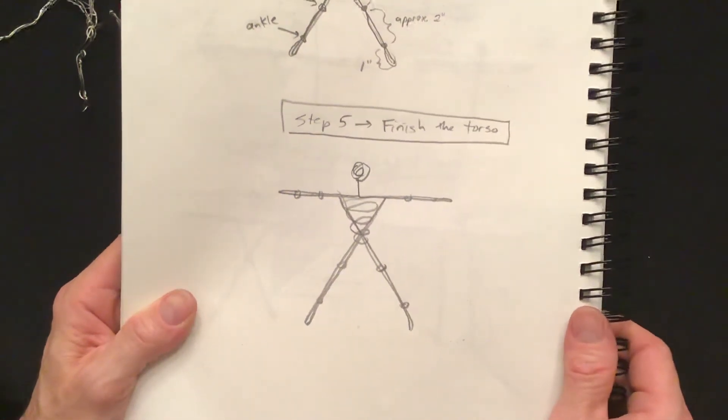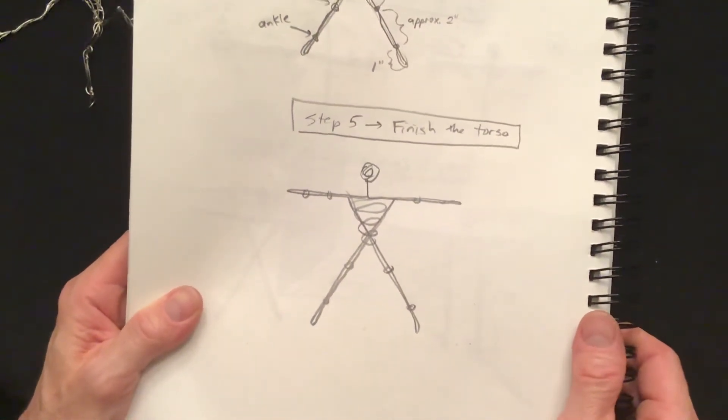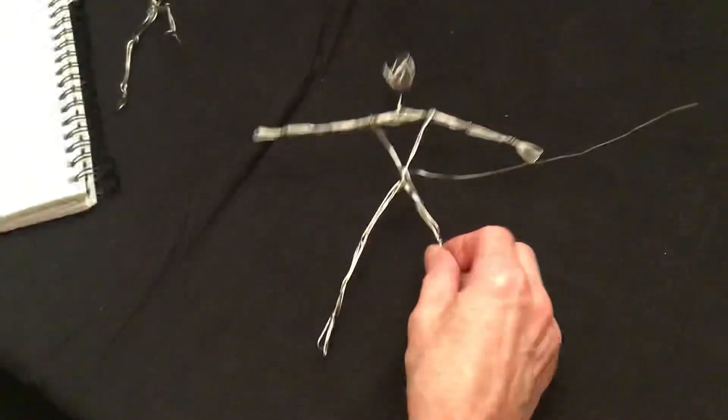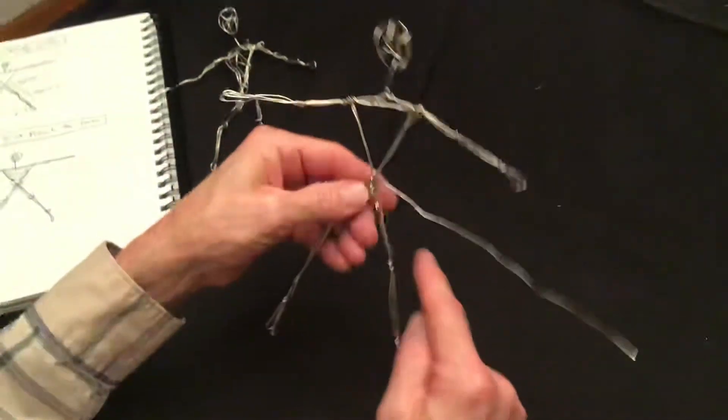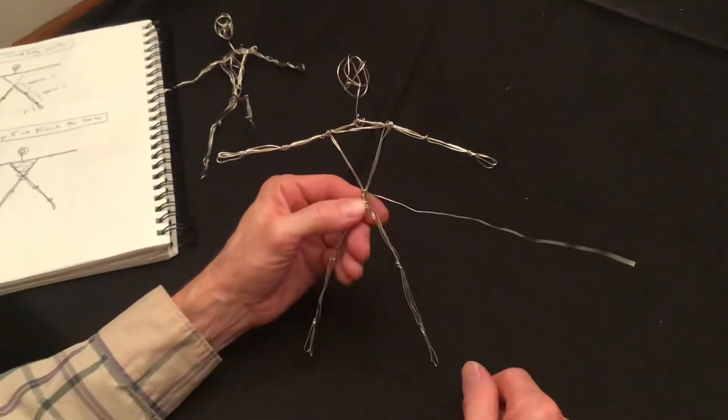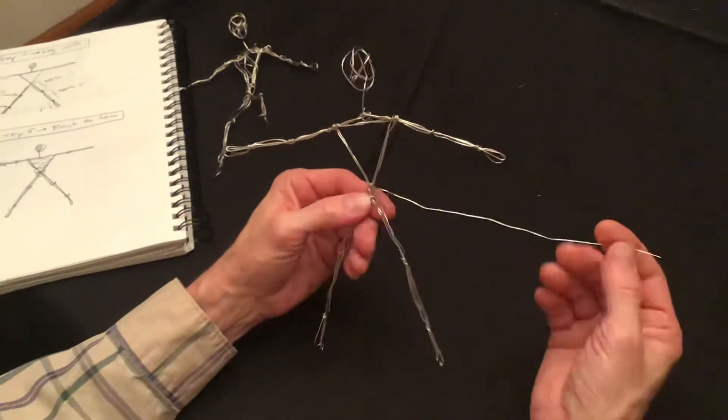Step 5, we are going to finish the torso and then pose the sculpture. So we completed the legs and the wire should be at the waist. You're going to take all of the remaining wire to build up the torso. Unfortunately I didn't have a whole lot left.